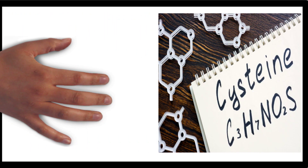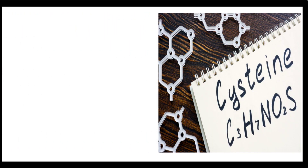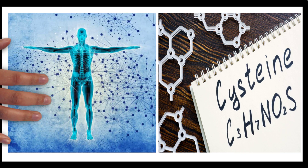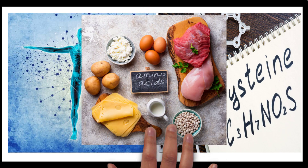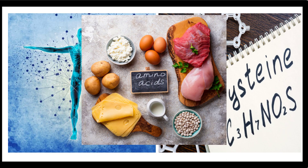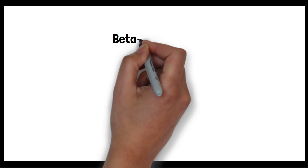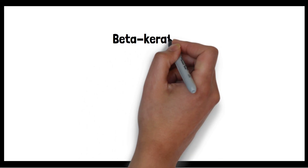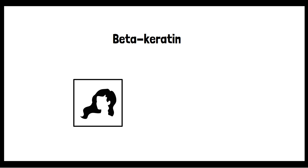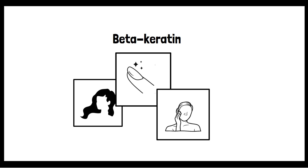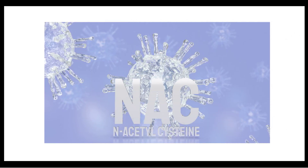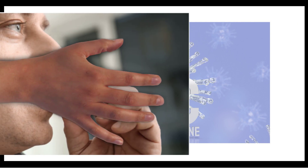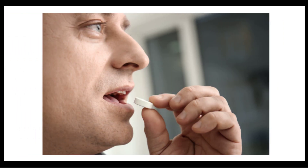NAC is a stable form of cysteine. Cysteine is a non-essential amino acid, which means that our bodies produce it by itself even if we don't get it from food sources. Cysteine is important for making proteins and is found in beta-keratin, which is the protein for hair, nails, and skin. While NAC is not an amino acid by itself, it is a modified form of the amino acid cysteine and can be taken as a supplement.